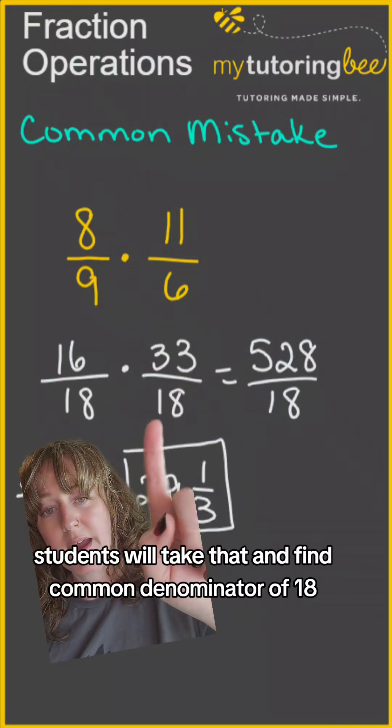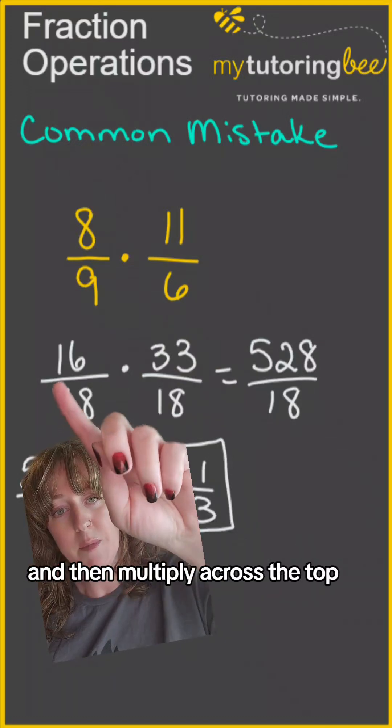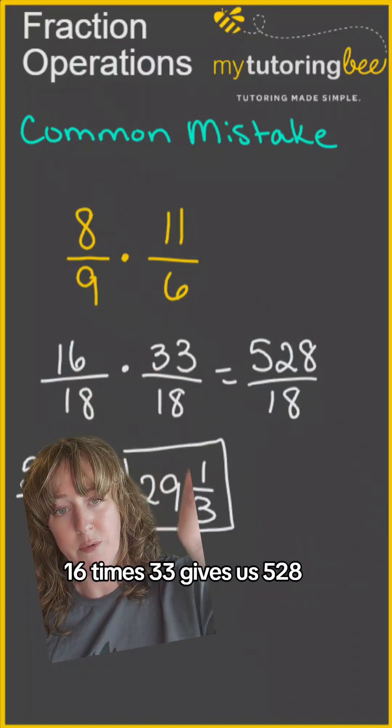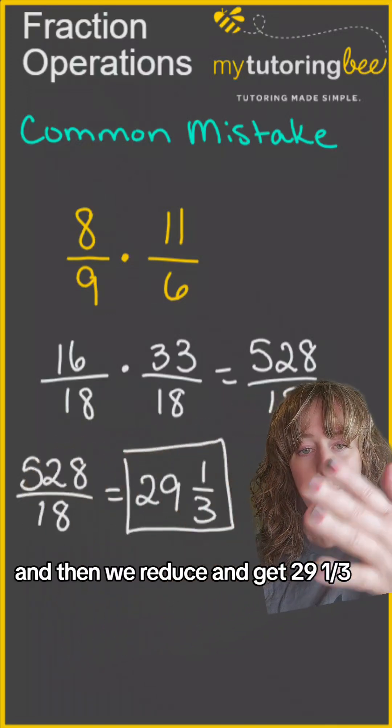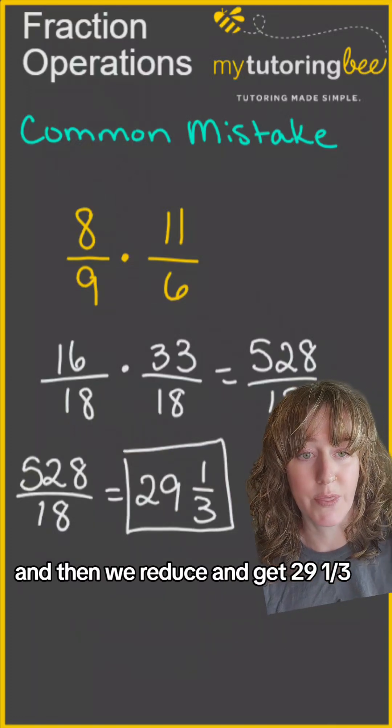Students will take that and find common denominator of 18, and then multiply across the top. 16 times 33 gives us 528. We're keeping the denominator of 18, and then we reduce and get 29 and 1/3.